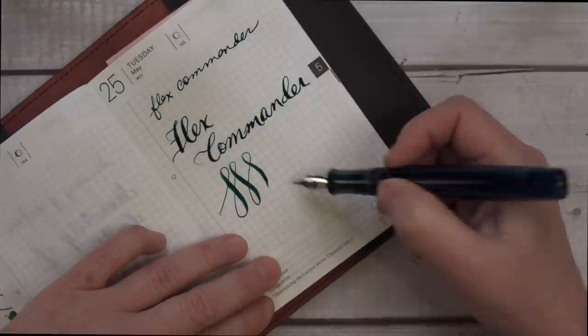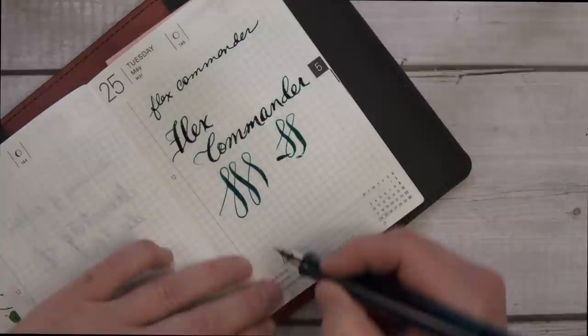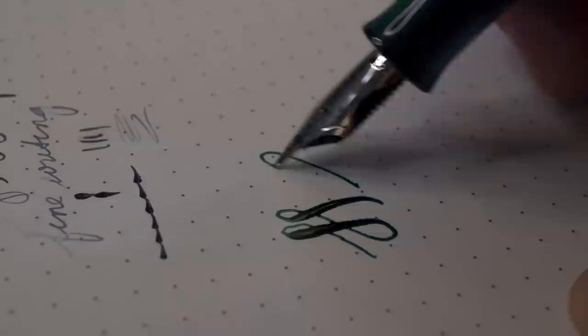People are missing the point if they're just looking at the difference between the widest part and the thinnest part of your stroke. What makes this a wonderful nib is the very, very light pressure you need to get it to flex.